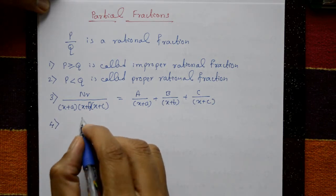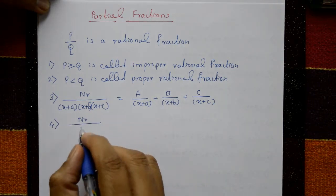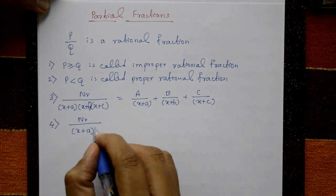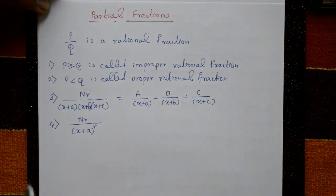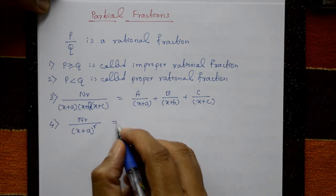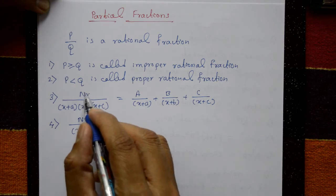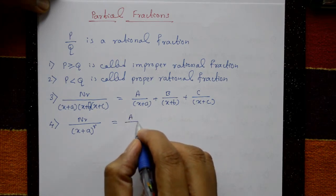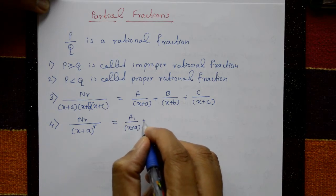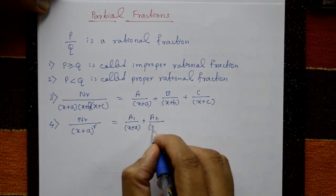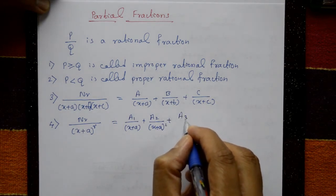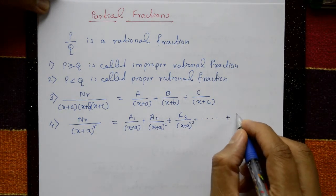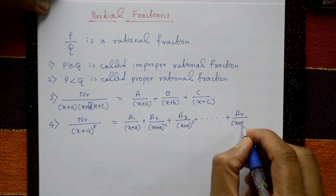Fourth point: when the denominator has a repeated linear factor of the form (x+a) raised to the power r, where r equals 1, 2, 3, 4 and so on, you split it as: A1 upon (x+a), plus A2 upon (x+a)², plus A3 upon (x+a)³, and so on up to Ar upon (x+a)^r.